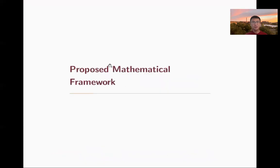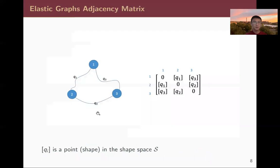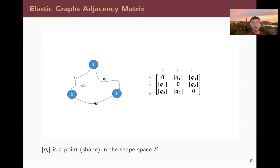How do we represent this shape? As a graph — more specifically, an edge-attributed graph with edges defined in the shape space. We represent this graph by its adjacency matrix A, where each entry A_{ij} represents the shape of the edge between nodes i and j. For example, with a graphic object having nodes 1, 2, 3, the entry A_{1,2} is represented by the equivalence class [Q_{1,2}], which is the shape of edge 1-2.